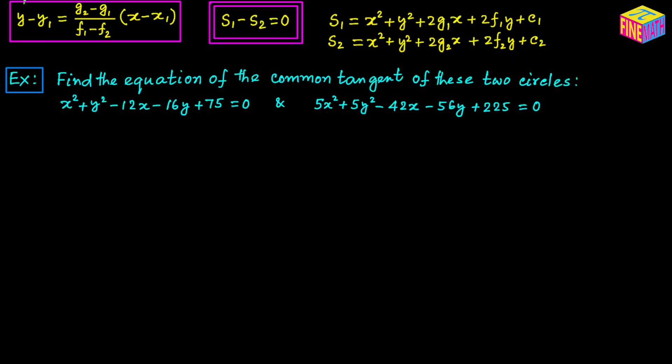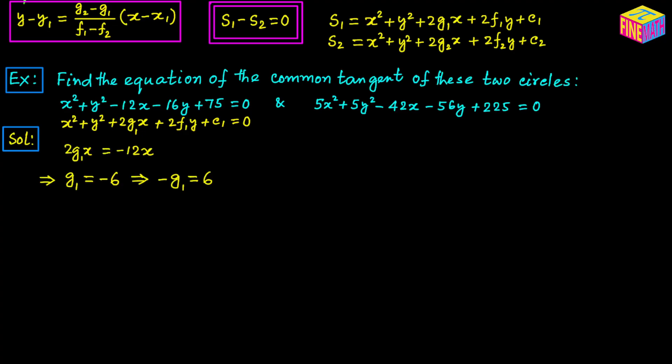Next we are going to take an example. Let's suppose we have an example that says: find the equation of the common tangent of these two circles. We are going to study the relative position of these two circles and determine how many common tangents we have. First, let's compare the equation of the first circle with the general form. From there, 2 G sub 1 times X equals negative 12 X, so G sub 1 equals negative 6 and negative G sub 1 equals positive 6.